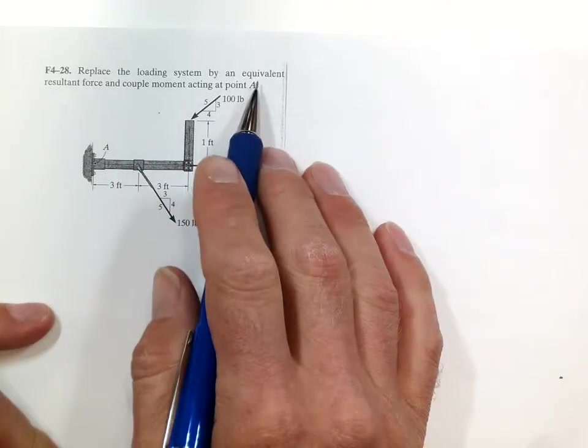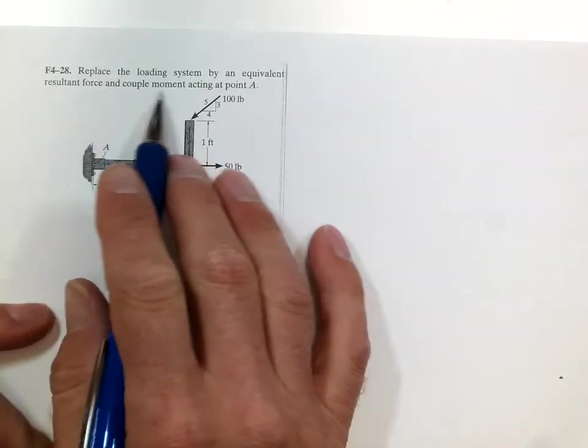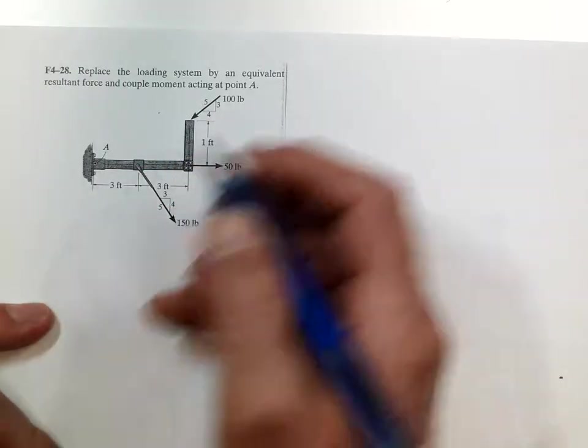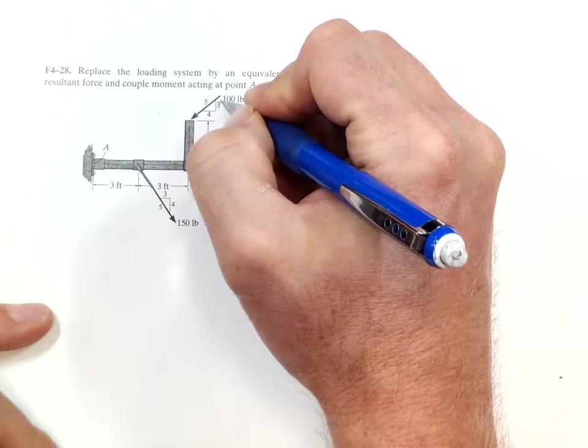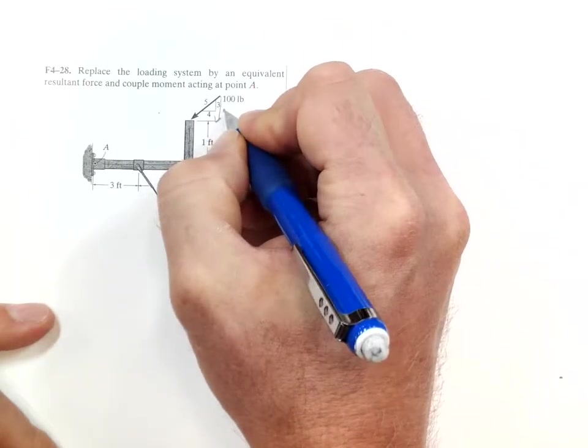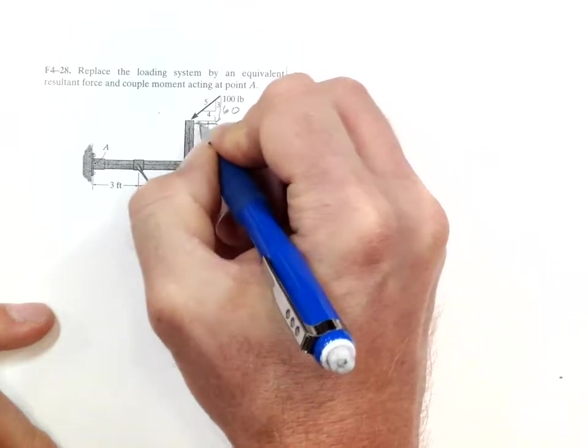Replace the loading system by an equivalent resultant force and couple moment acting at point A. Let's break these two forces down to components first. So we got a 3, 4, 5.